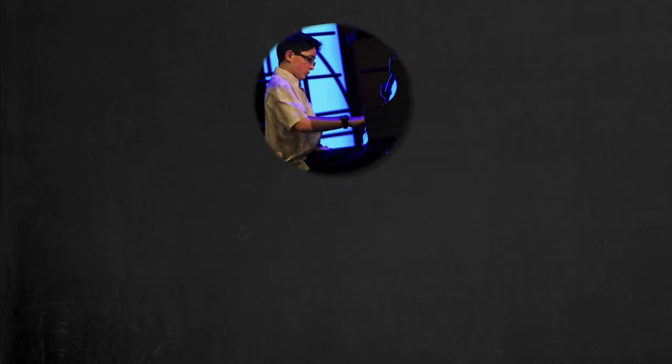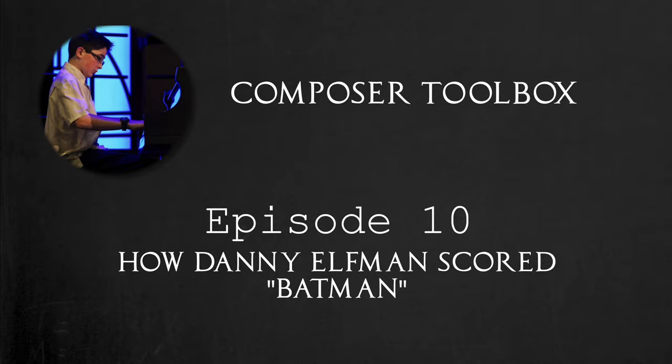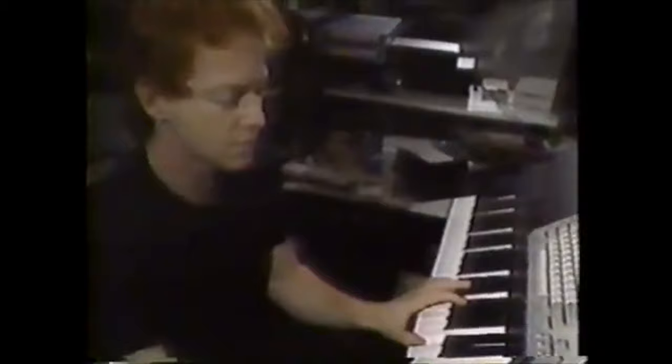Hello and welcome to Composer Toolbox, the show that looks at the common techniques utilized by the master composers and how you can practically apply them. In this episode I wanted to take a brief detour away from the Star Wars scores and look at a score very near and dear to my heart — Danny Elfman's score for the 1989 film Batman. This will mostly be an introduction to the score and its composer.